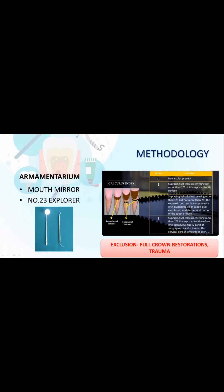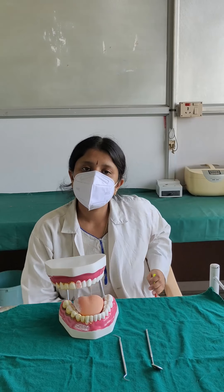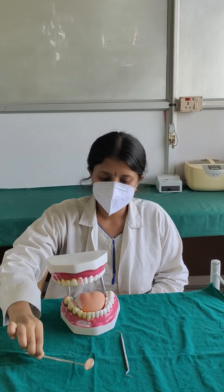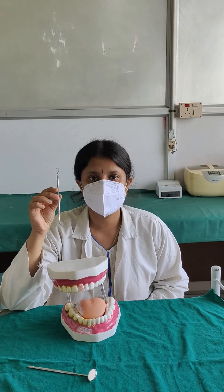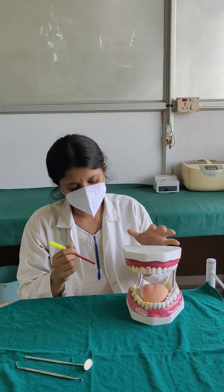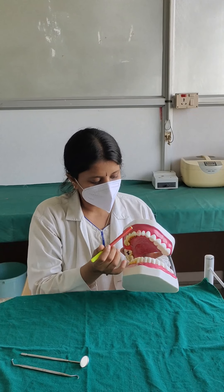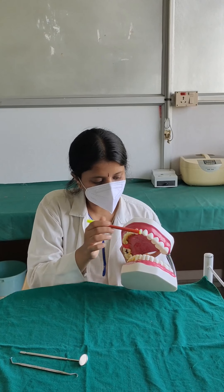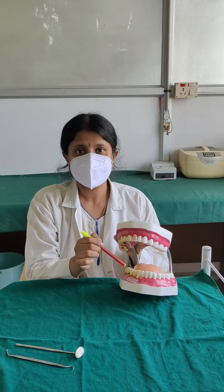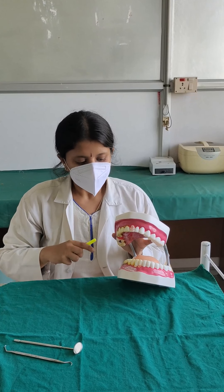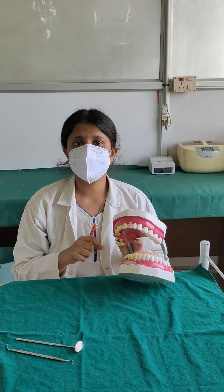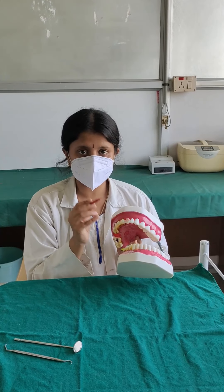Now we will have a video demonstration of the Oral Hygiene Index Simplified. The instruments required are the mouth mirror and the number 23 explorer or shepherd's hook. There are 6 index teeth: 16, 11, 26, 46, 31, and 36. In the lower posterior region, 36 and 46 are measured on the lingual surface, while 31, 11, 26, and 16 are measured on the buccal or labial surface. The index has two components — debris followed by calculus.